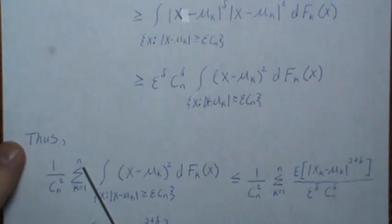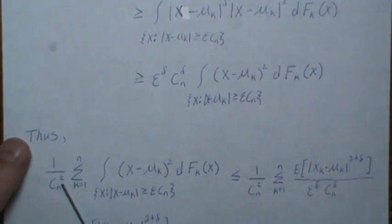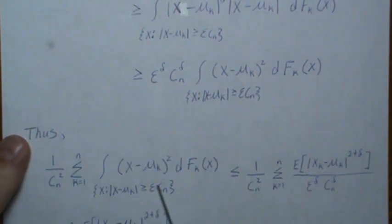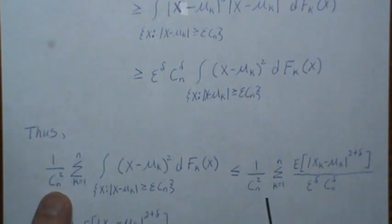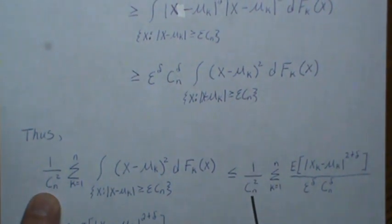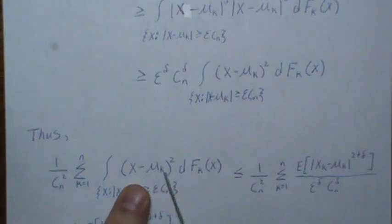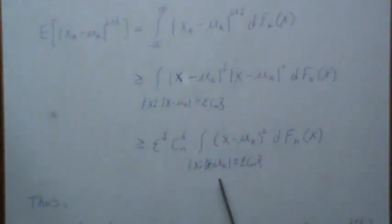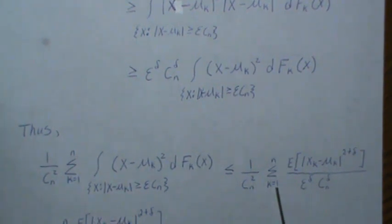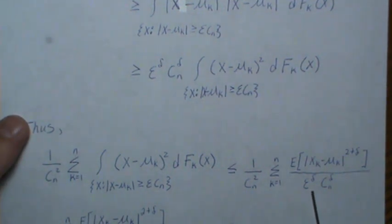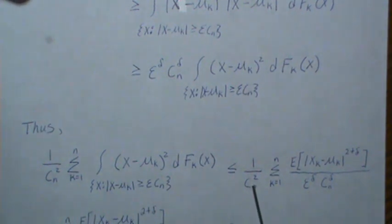We're going to take this piece here, we're going to sum from k equals one to n, and we're also going to divide by cn squared. Now we just showed up here that this is less than this piece. So now notice the one divided by cn squared are the same, the sums are the same, and then this quantity we get from this piece here.